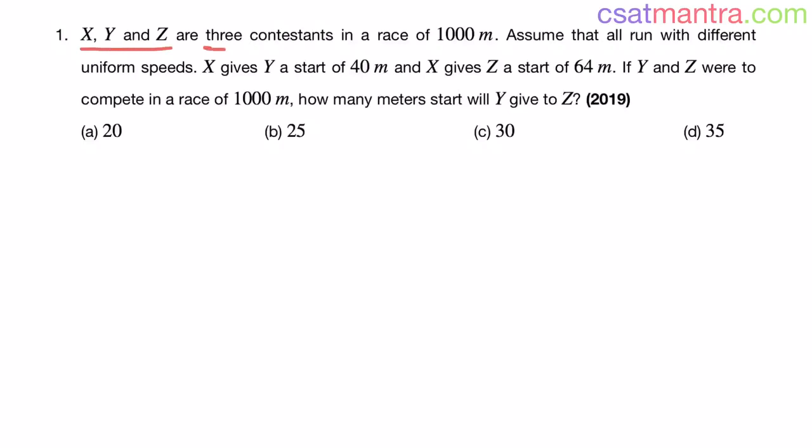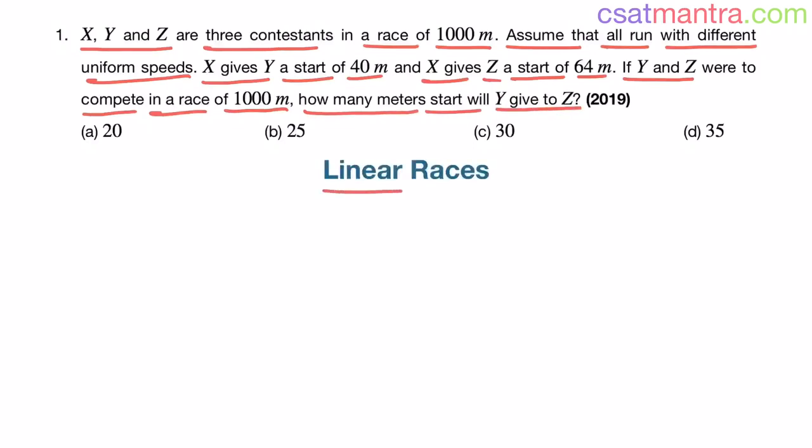X, Y and Z are three contestants in a race of thousand meters. Assume that all run with different uniform speeds. X gives Y a start of 40 meters and X gives Z a start of 64 meters. If Y and Z were to compete in a race of 1000 meters, how many meters start will Y give to Z? This question is based on linear races, asked in 2019.